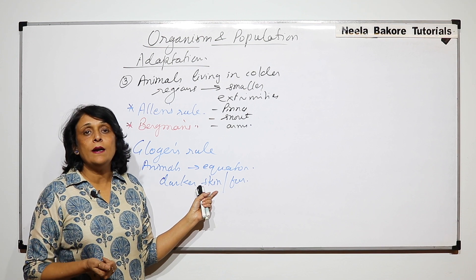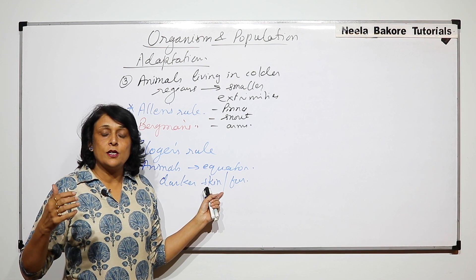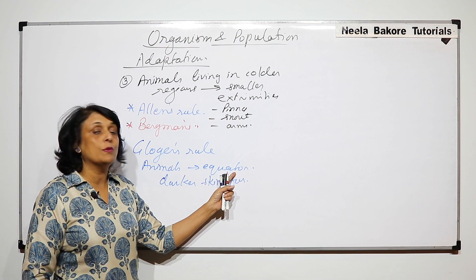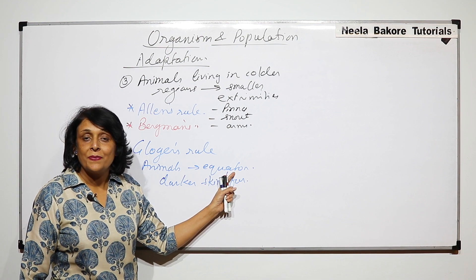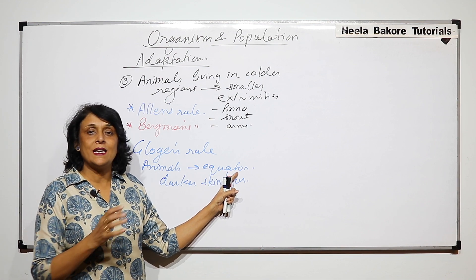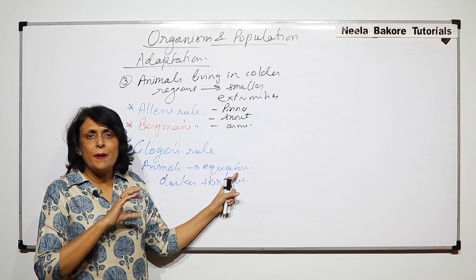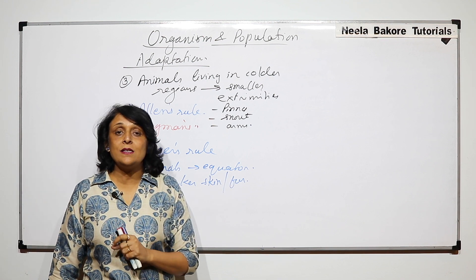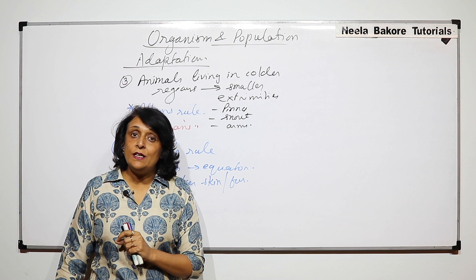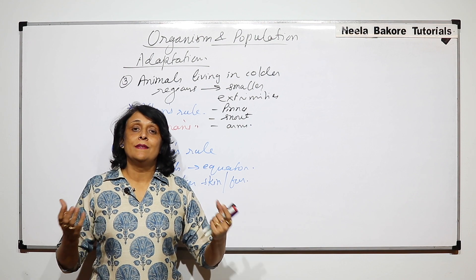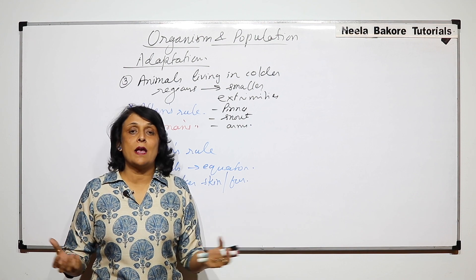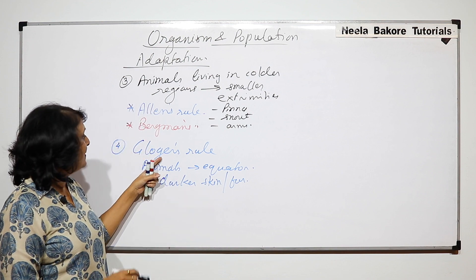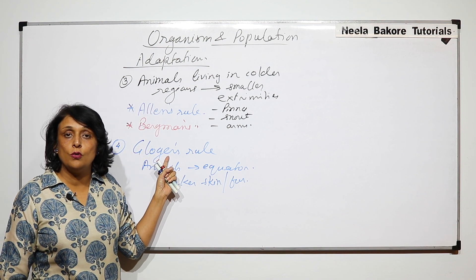If you compare bears found in the polar area with those found in other regions: the grizzly bear has brown or blackish fur, whereas polar bears have white fur. This is again a sun-intensity-dependent adaptation, and it is known as Glogger's rule.